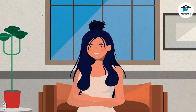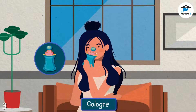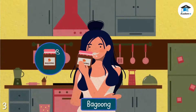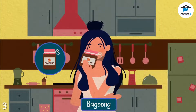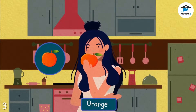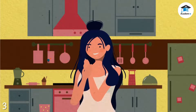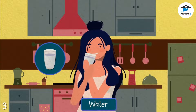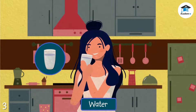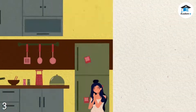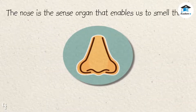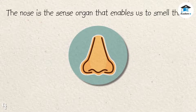Look at the girl. How do you think can she sense the smell of cologne? She smelled objects including bug, along, orange, vinegar, and water. Which body part did she use to smell those things?